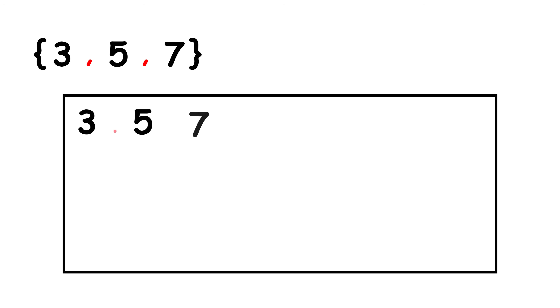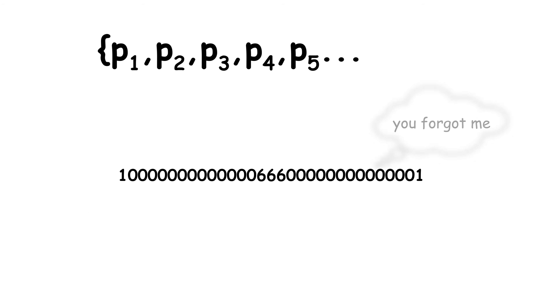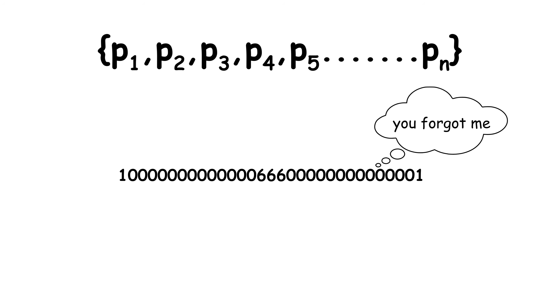In conclusion, for each finite set of prime numbers, we will always be able to find another prime number which is not in that set. Since no finite set can contain every prime number, the set of prime numbers must be infinite.